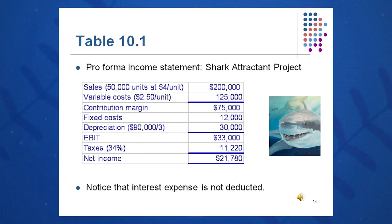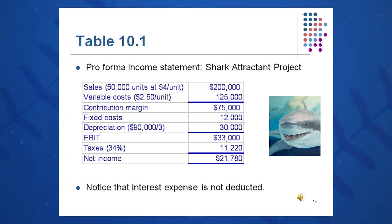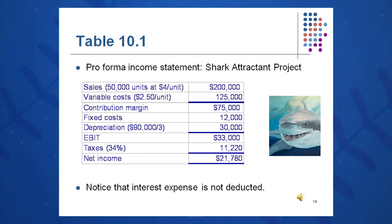The contribution margin of $75,000 does indeed cover our fixed cost of $12,000, so we'll go ahead with the project. Depreciation will be $90,000 on the property, plant, and equipment divided by three years straight line to zero — $30,000 per year of depreciation expense on the income statement — leaving us with EBIT of $33,000. Taxes at 34% are $11,220, leaving us with net income of $21,780. From this we can quickly calculate OCF: EBIT plus D minus T. So $33,000 plus $30,000 depreciation added back as a non-cash expense, minus $11,220.